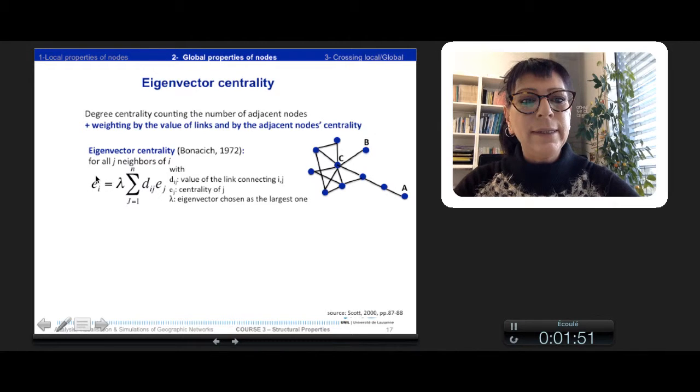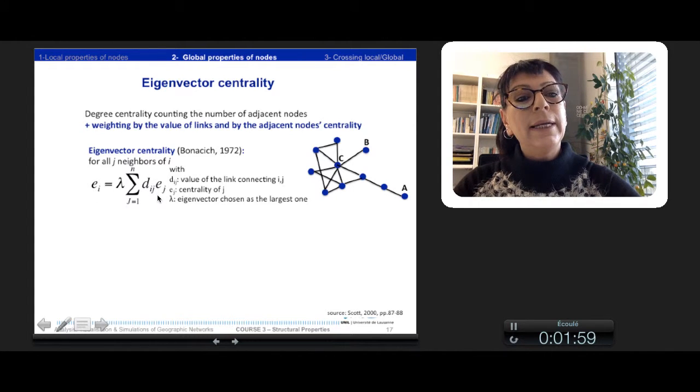And adds also the centrality of the adjacent nodes. So the index, the eigenvector centrality, is a product of the value of the linkages connecting i to all its adjacent nodes j, and the value centrality of all these nodes j.